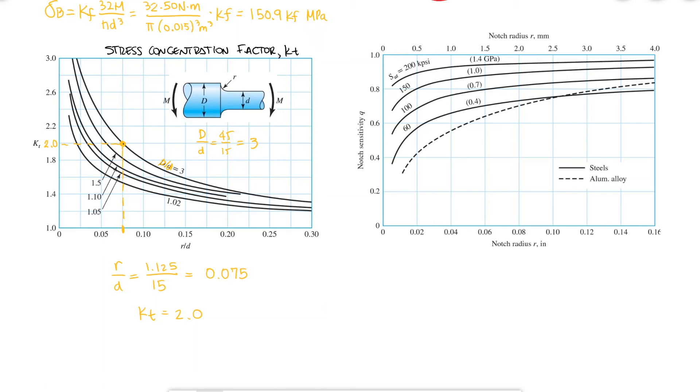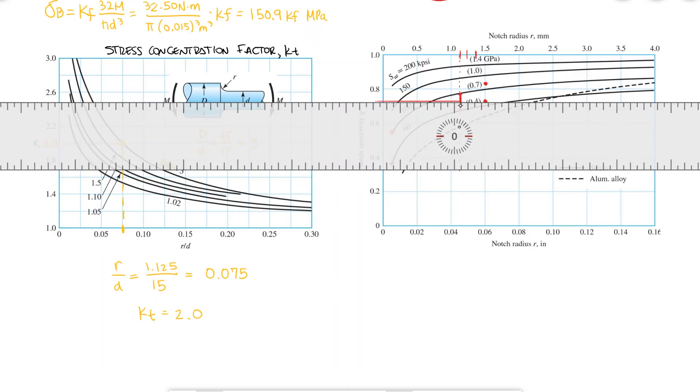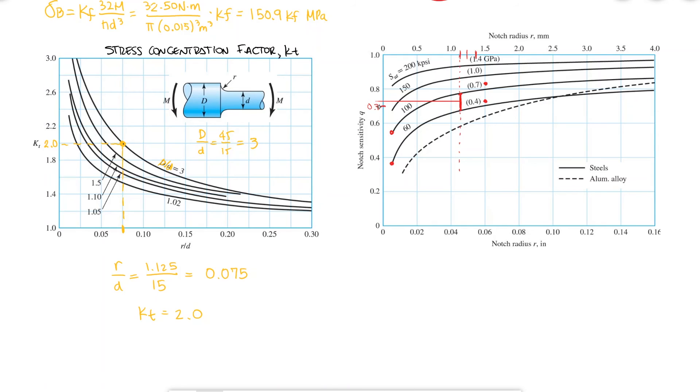Looking at the notch sensitivity plot, and using an ultimate strength of 550 MPa, which is exactly between 400 and 700 MPa, and using the same radius for the notch of 1.125, which is one-fourth of the way from 1 to 1.5 mm, I would get a value slightly higher than 0.7. I will assume Q equal to 0.72. Using these two values and the expression we learned in today's video, I can calculate the fatigue stress concentration factor and find that it is equal to 1.72.